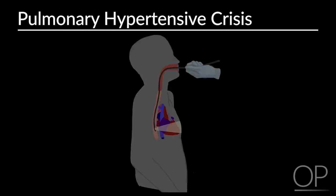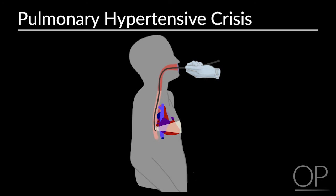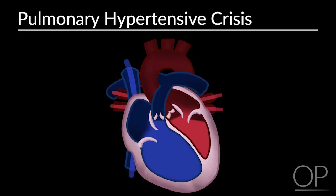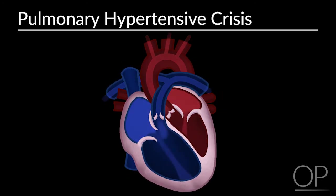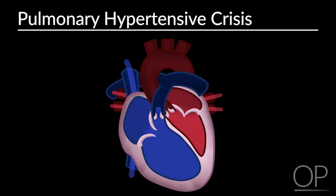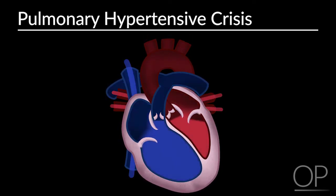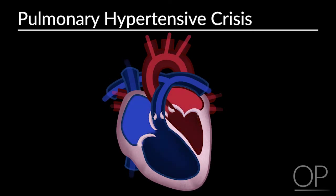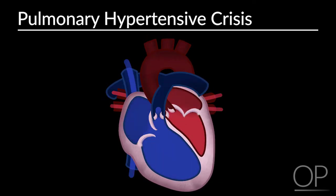If you have access to a transesophageal echocardiograph, you will see a dilated and poorly contracting right ventricle, an underfilled left ventricle, pulmonary regurgitation, tricuspid regurgitation, and elevated right ventricular pressures.